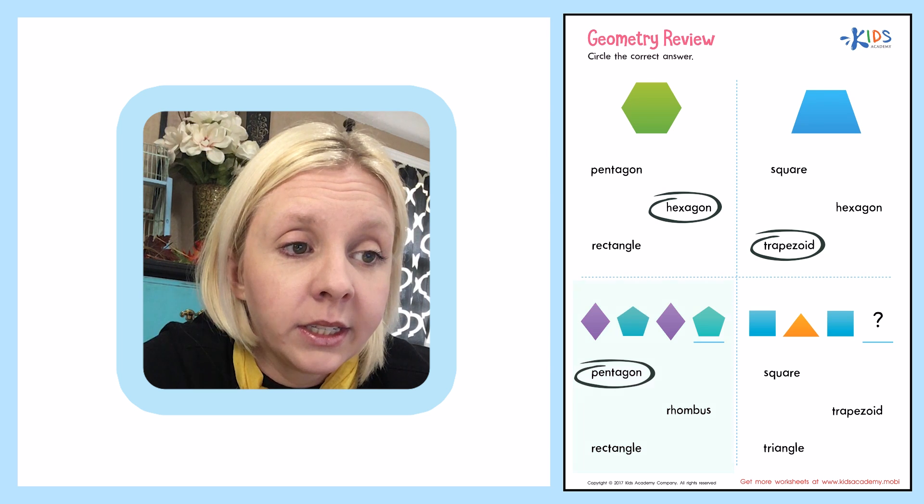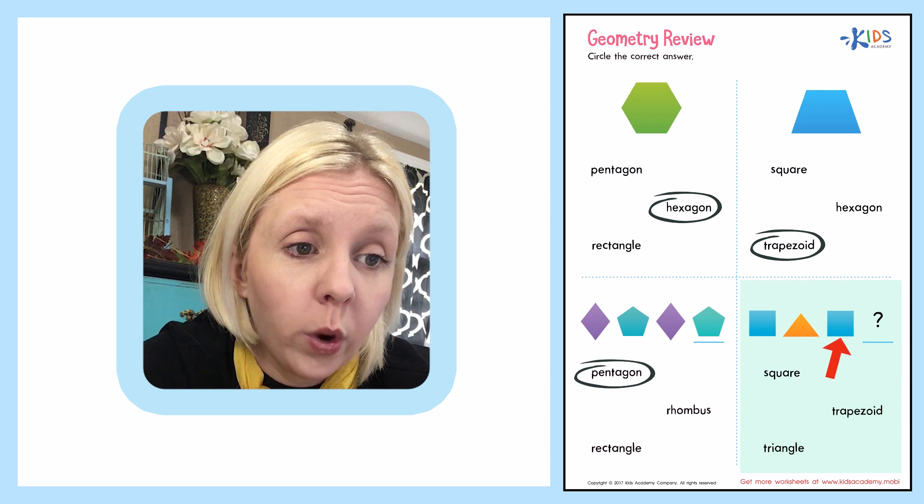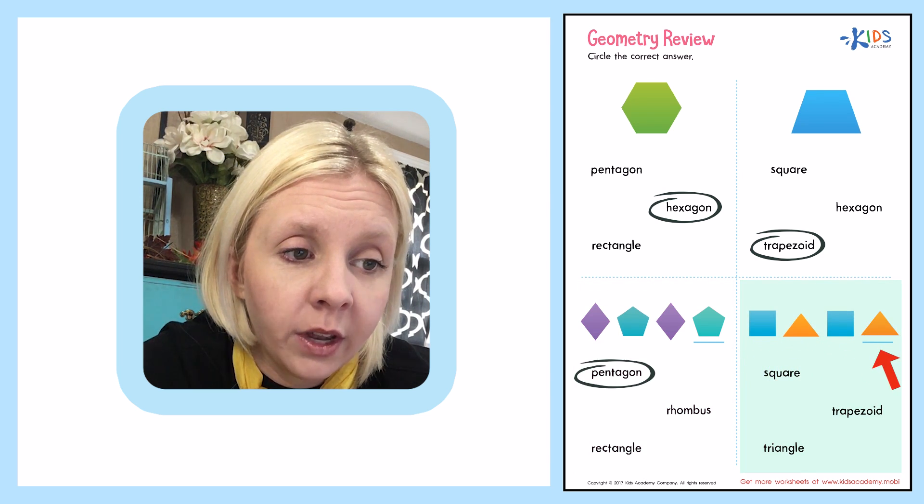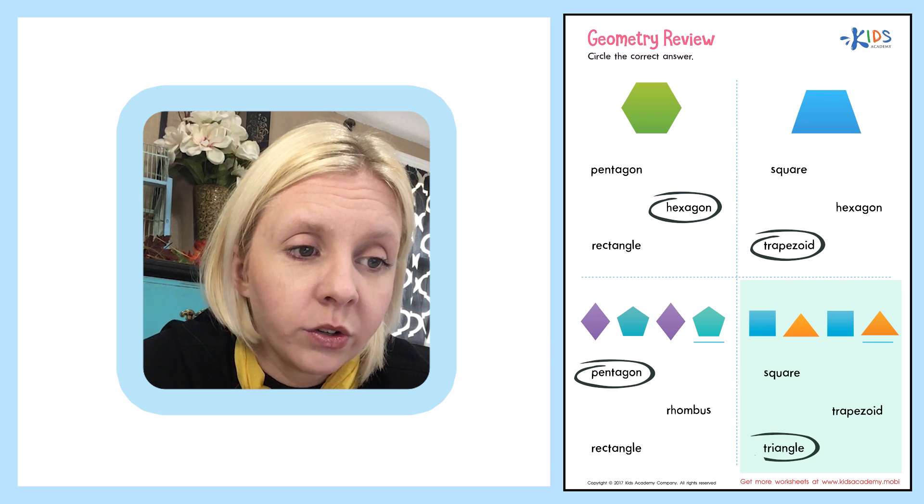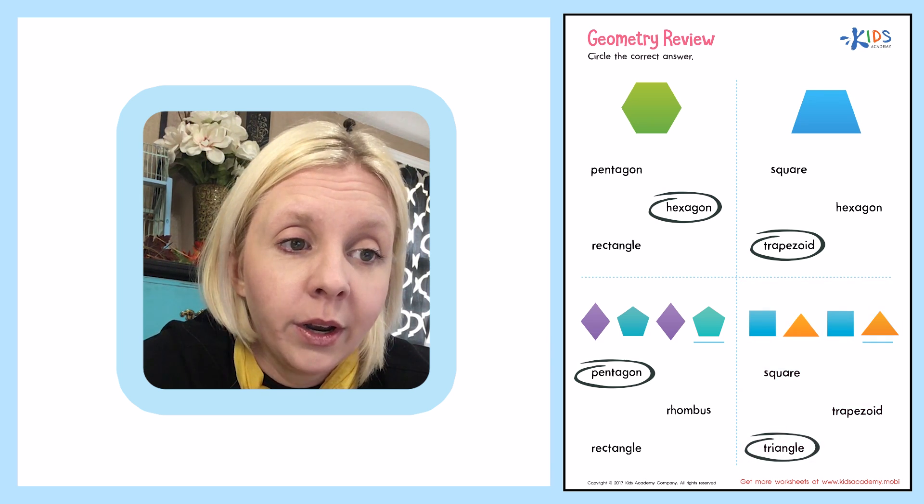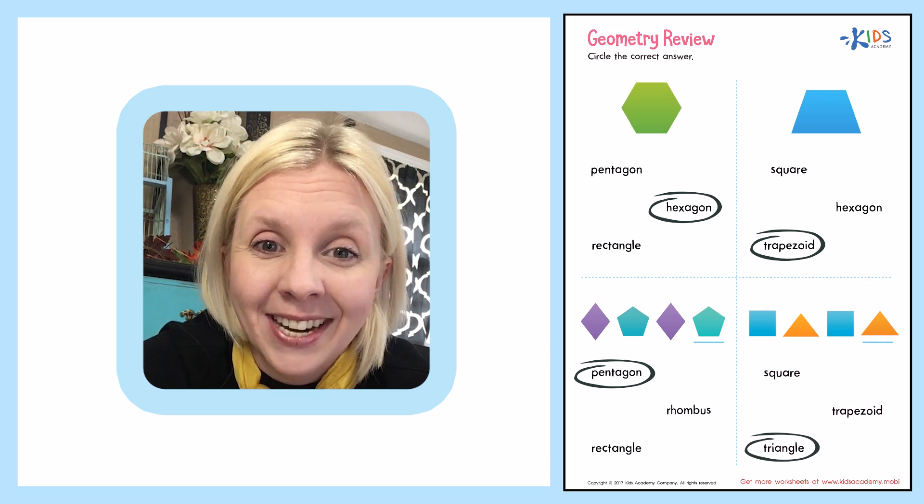The next one is a square triangle, square triangle. Let's see if we can find that down here. Yep, right down here. Here's a triangle. So we're going to circle that one right over there. Great job today. Bye.